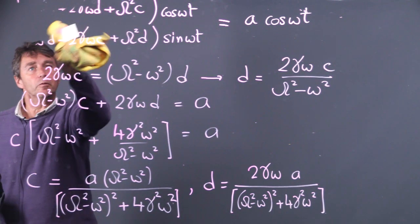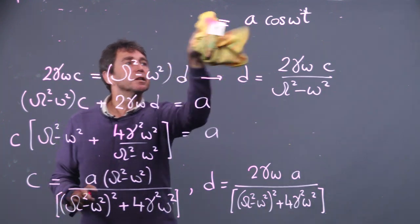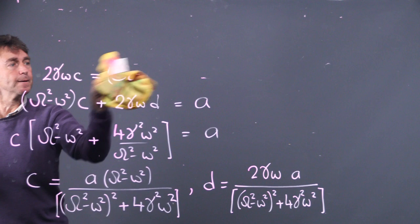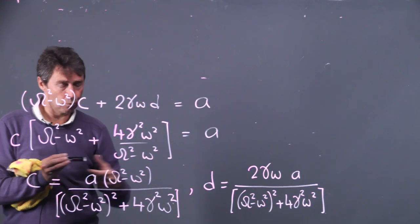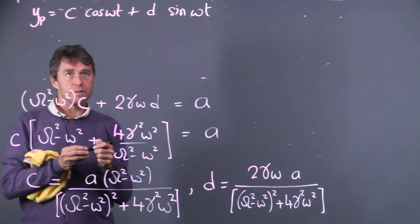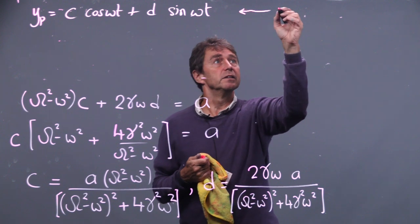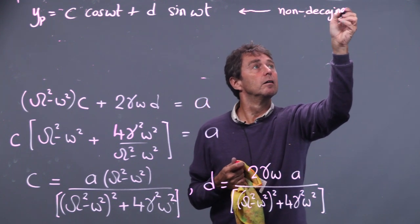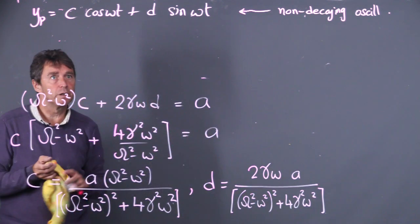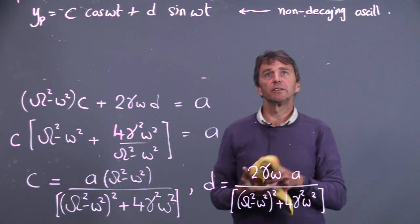Having found c and d, I can write the particular solution as y_p = c cos(ωt) + d sin(ωt). Notice this solution is a pure cosine and sine with no exponential decay — these are non-decaying oscillations. This is the forced response: it contains the forcing amplitude a and is the part of the solution that comes purely from the forcing.